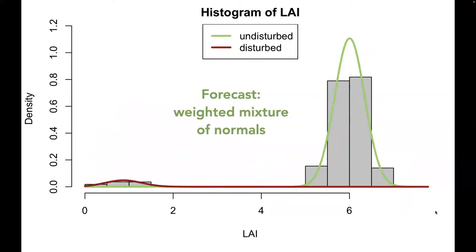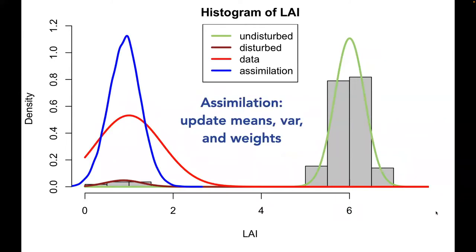In our newest simulation algorithm, we represent the forecast as a mixture of normals, each weighted by the forecasted probability of being in that state. The simulation then updates not just the mean and the variance of each mode, but the weight assigned to that mode, which is our posterior probability of disturbance. In this example, the observations in red are clearly indicative of a disturbed state, and so the posterior disturbance probability is close to 100 percent, allowing the assimilation to discreetly jump from one state to another without getting stranded in the no man's land in between.